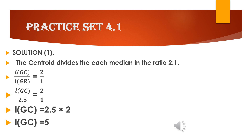For the first part of problem 7, using the property that the centroid divides each median in the ratio 2:1, we write GC upon GR equals 2 upon 1. Substituting the given value GR = 2.5, and cross multiplying: GC = 2 × 2.5 = 5. So the length of GC is 5.